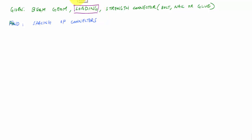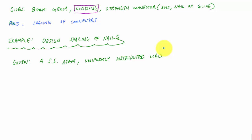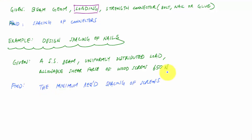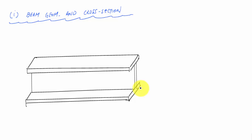Let's start the example problem. We have a simply supported beam with a uniformly distributed load, and the allowable shear force on a wood screw is 650 newtons. We want to find the minimum required spacing of the nails or screws. The beam has an I-shaped cross section built up from three boards connected with nails.